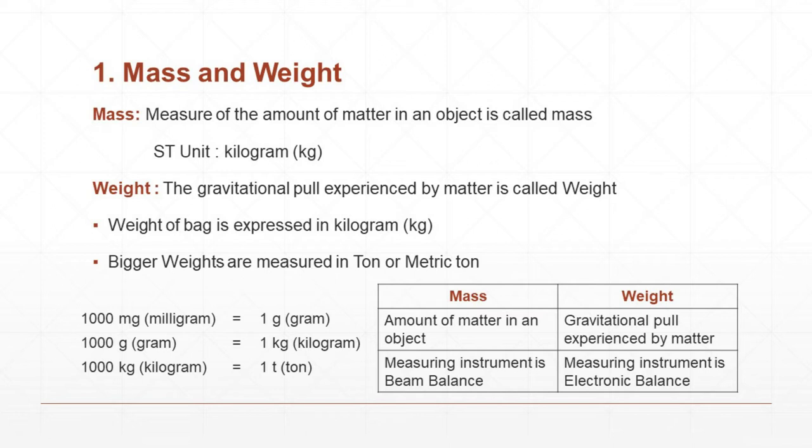The weight is directly proportional to the mass on the earth's surface. On moon, where the gravitational force is lesser than earth, the weight will reduce but the mass will remain the same. The moon's gravitational pull is one-sixth of the earth's pull. Thus, objects weigh six times lighter on the moon than on the earth.